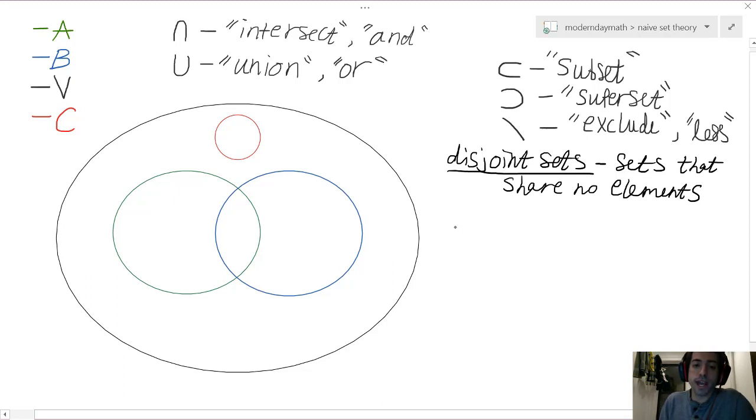But what we can say is that if we look at the intersection of A with C, that will produce what we call the empty set, which is a set that contains no elements. It's just curly brackets containing air. That's it.